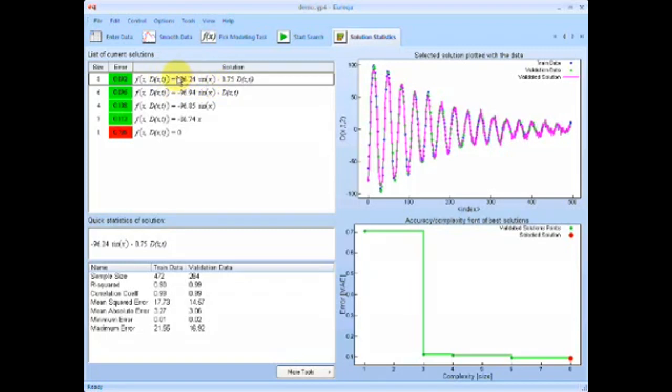We can interpret this as the vertical component of gravity acting on the angle x. That pulls the pendulum down.